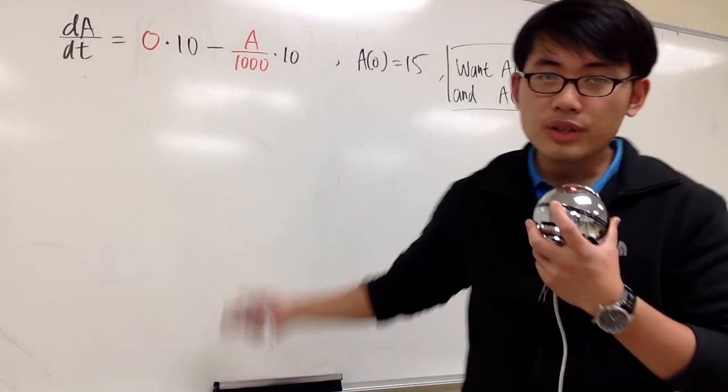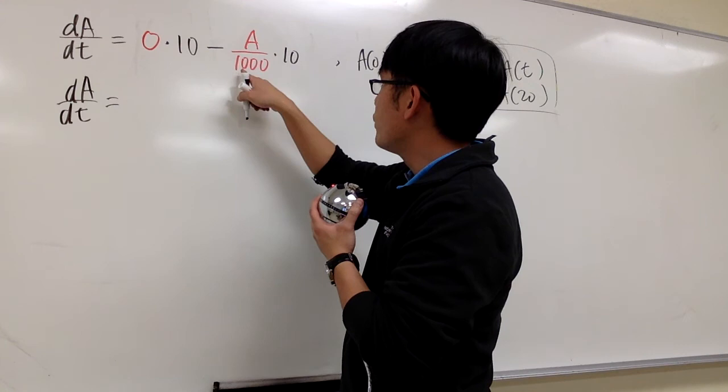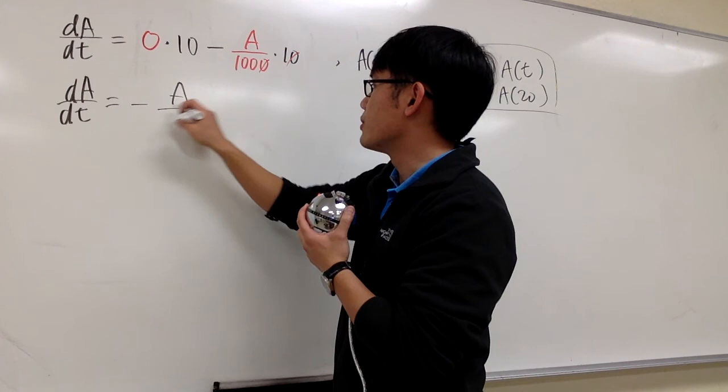So now we'll solve this differential equation along with this initial condition. Here we have dA/dt, this is equal to 0, and we have A over 1000 times 10. So we can get rid of this, and this is negative A over 100.